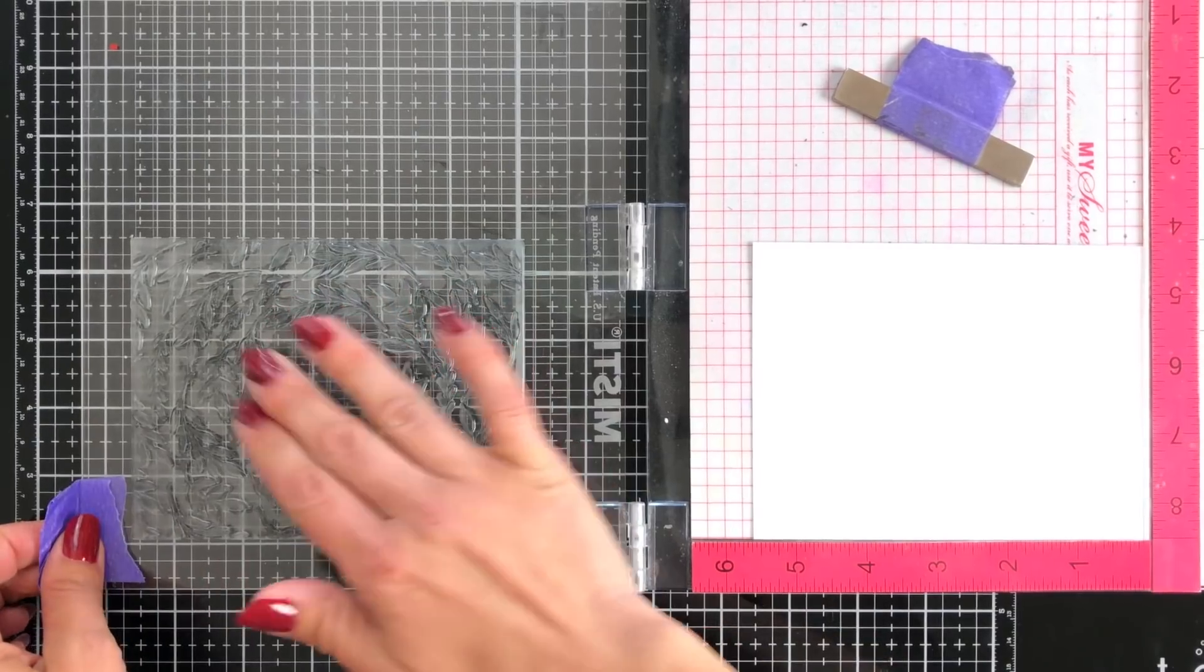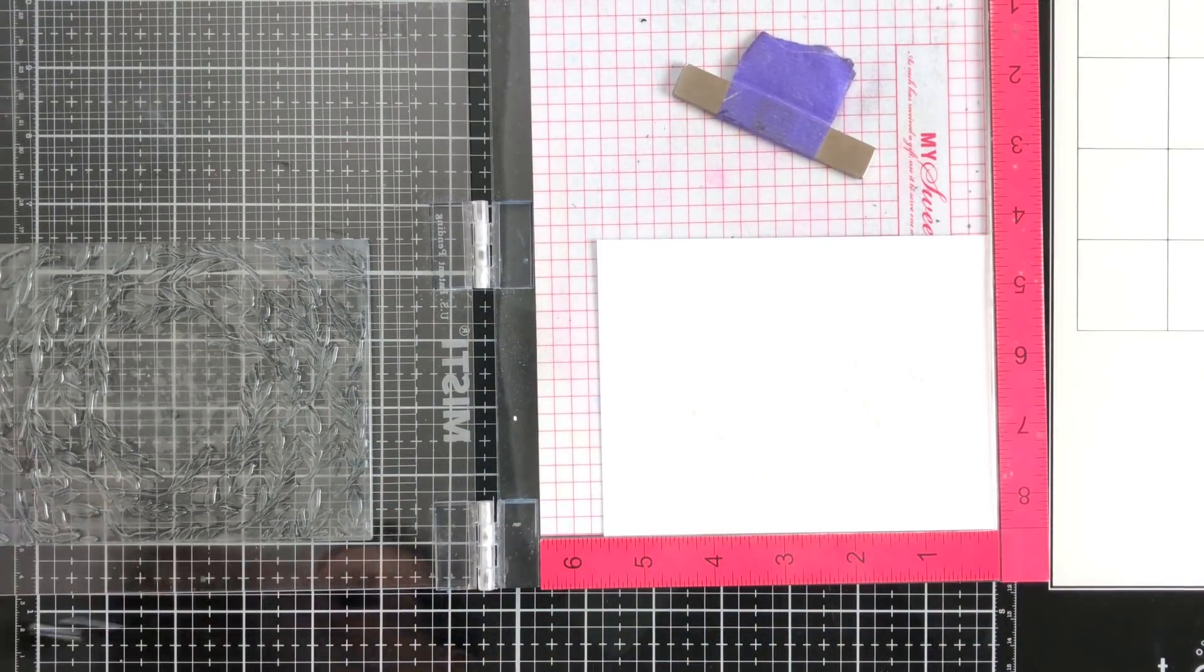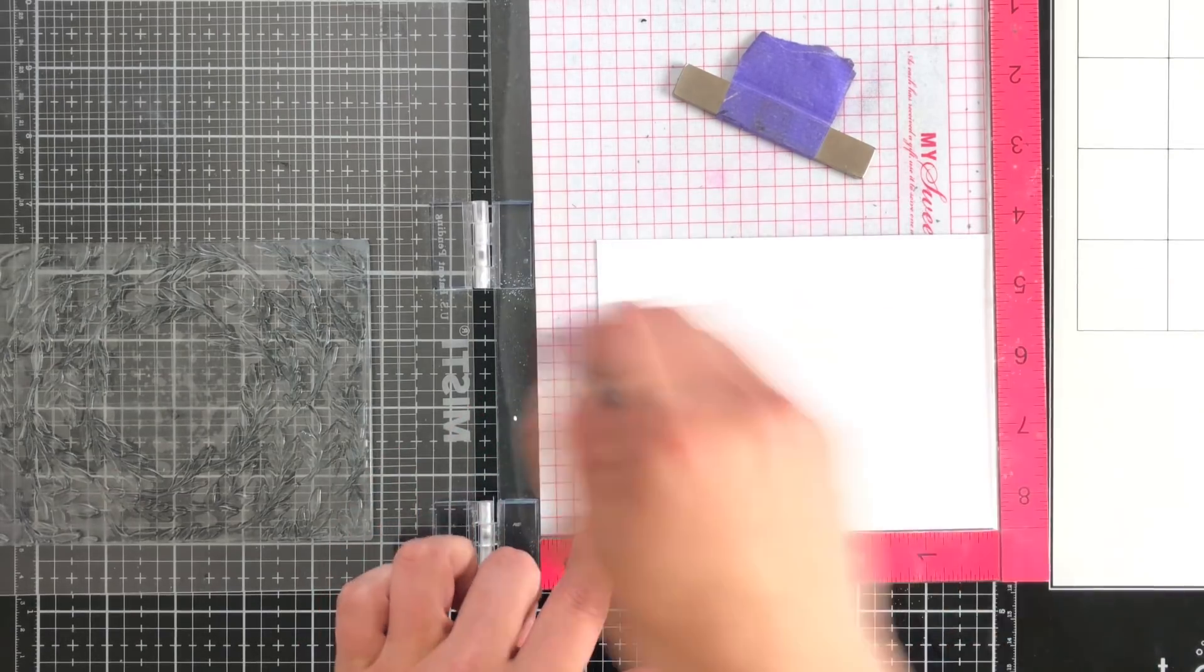That way when you ink this up you're not going to get ink on that raised area if there was a bubble there. That just helps save you from maybe cutting your stamps or anything like that. A nice little trick that you can do.